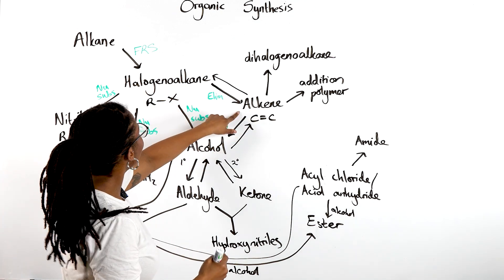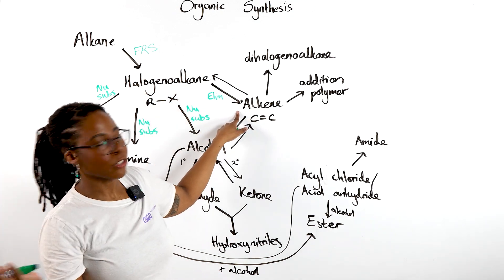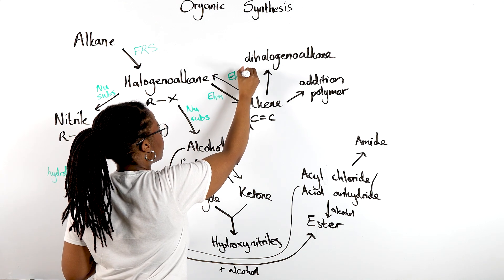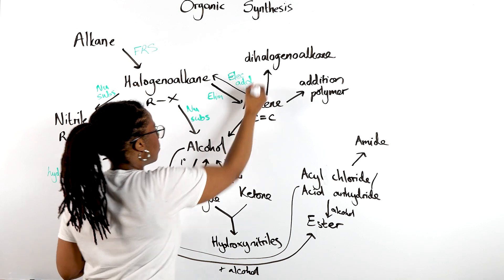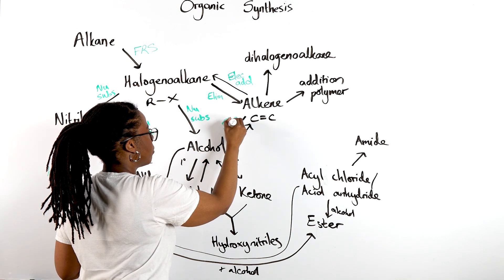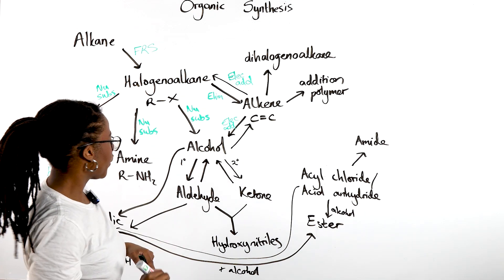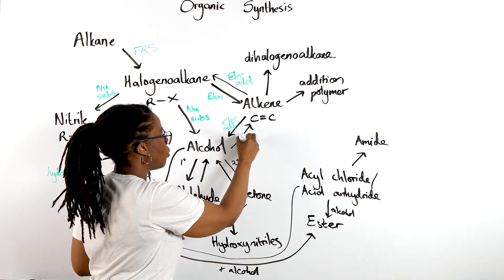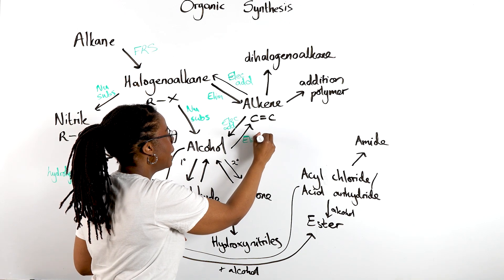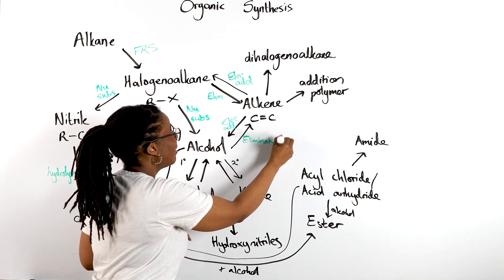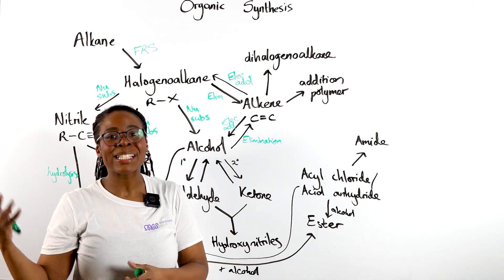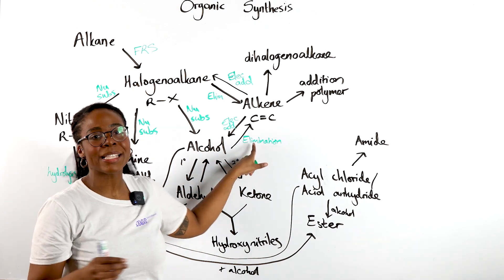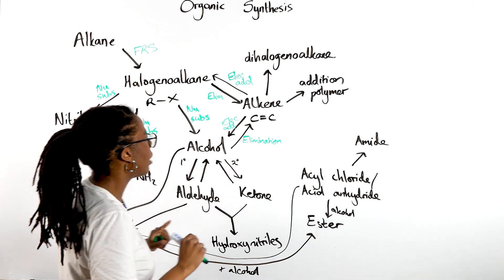Alkenes — we know electrophilic addition. Alcohol to alkene — again, the only way we can get an alkene is through an elimination mechanism. The type of reaction you'll see called a dehydration reaction, but the type of mechanism is an elimination mechanism. So there's a difference. Dihalogenoalkane — also electrophilic addition.